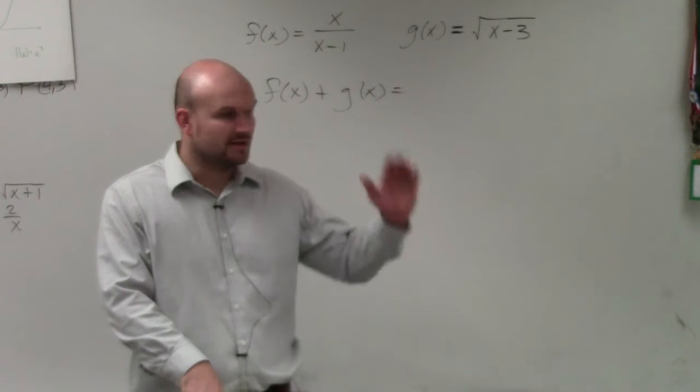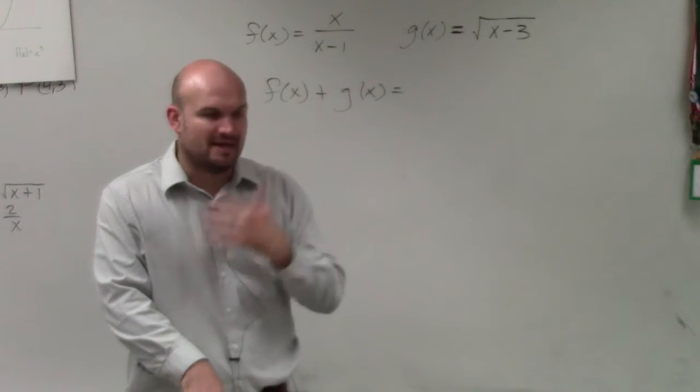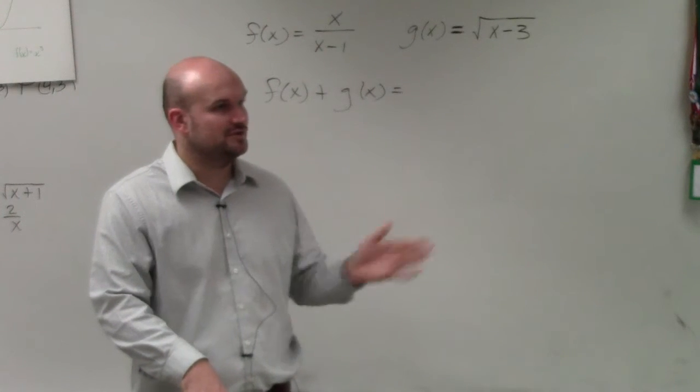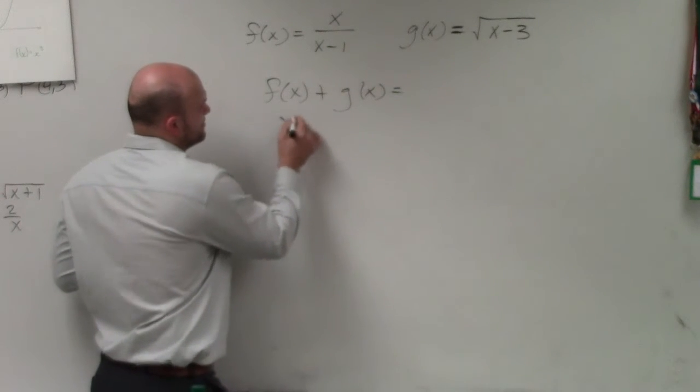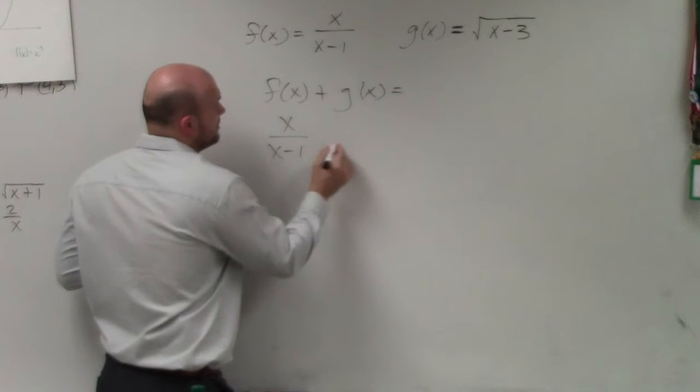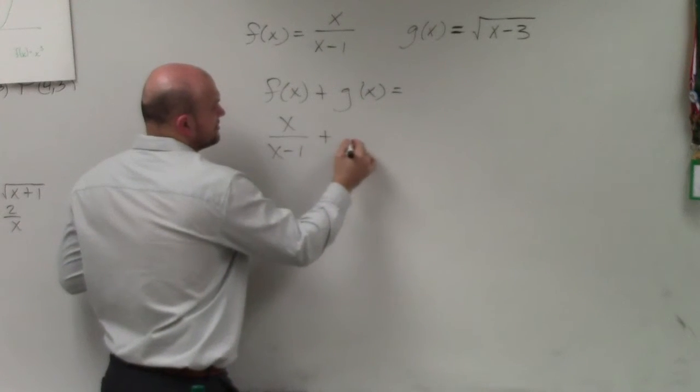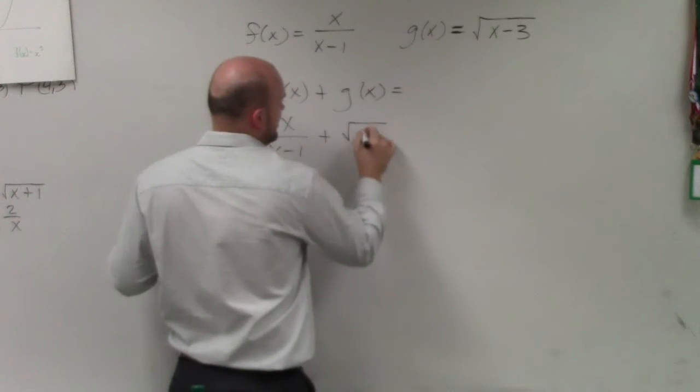However, you are going to be doing some problems where you're going to have polynomials. And if you have to add, you would just add combined like terms. But in this problem, we don't really have like terms. We have x over x minus 1 plus g of x, which is the square root of x minus 3.